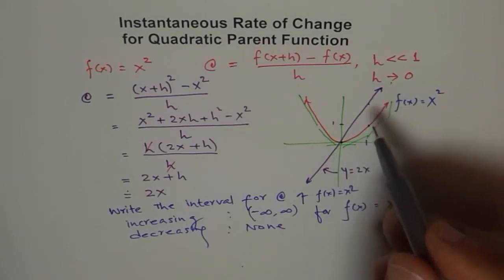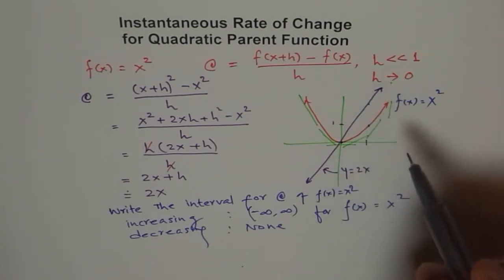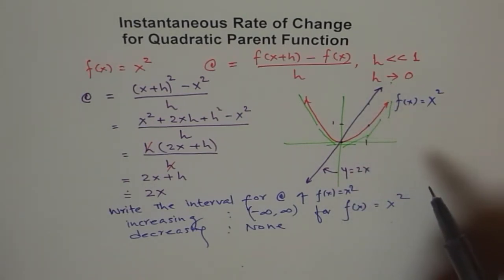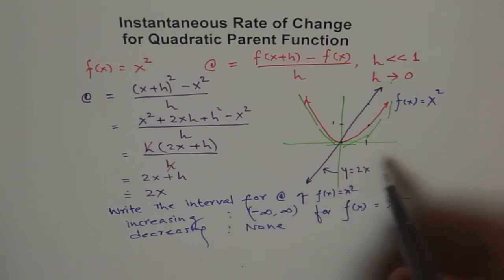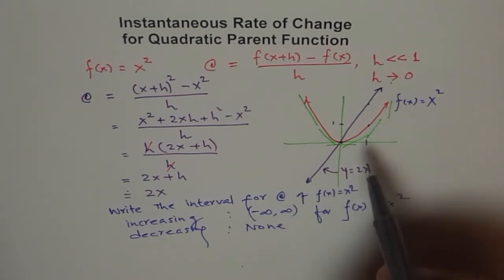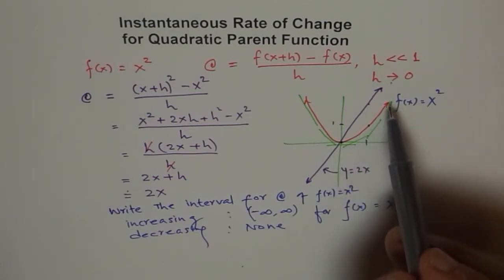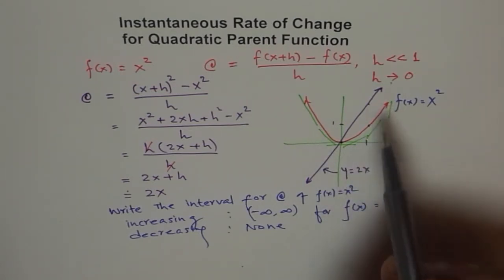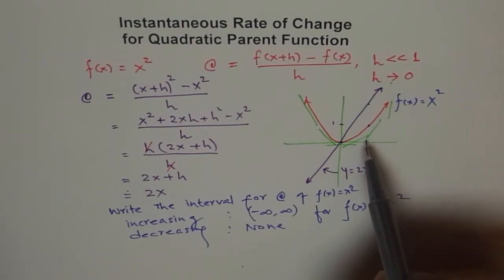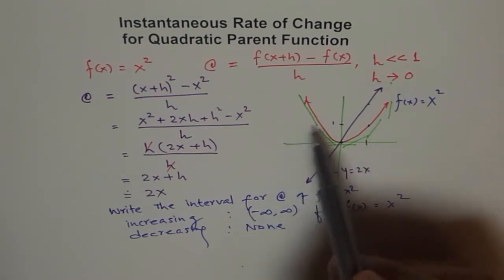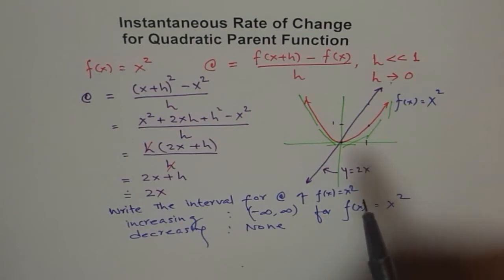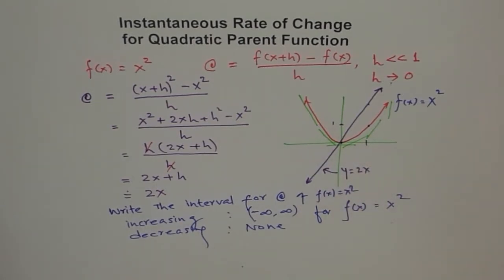The rate of change for a quadratic function always increases over its entire domain. The value of f(x) decreases from minus infinity to 0, and then increases from 0 to infinity. But the rate of change increases all throughout its domain. That is a very, very important conclusion.